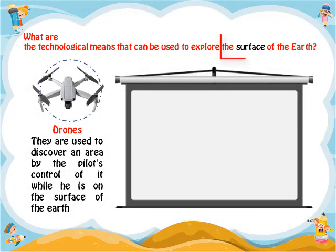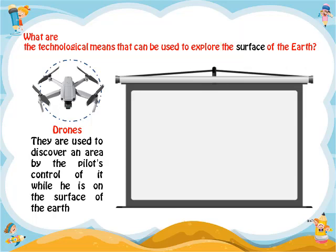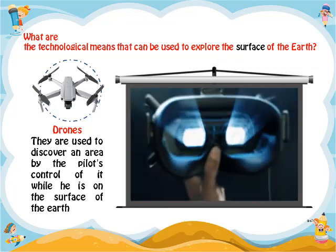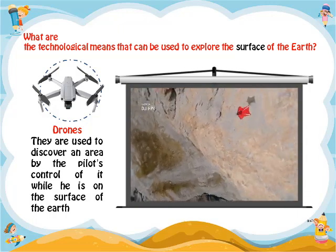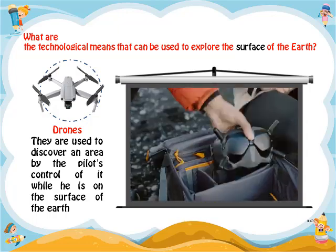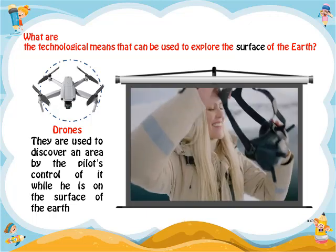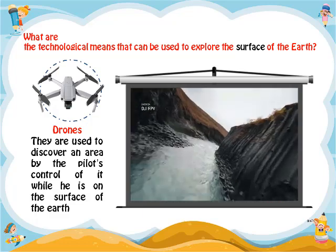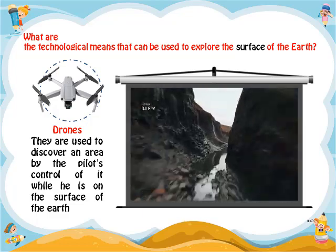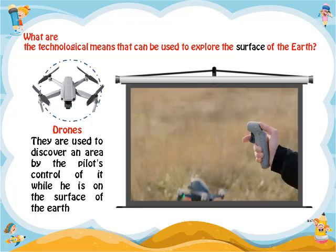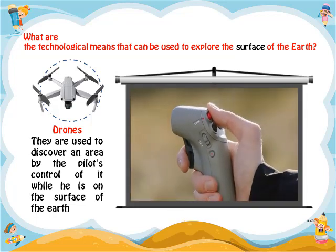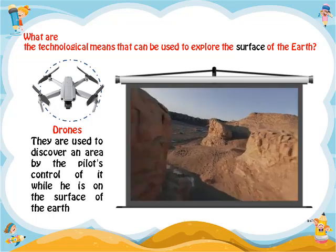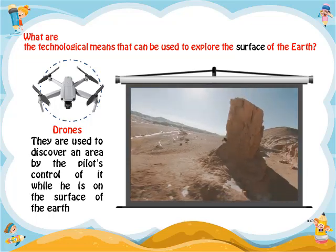What are the technological means that can be used to explore the surface of the Earth? Drones: they are used to explore an area through the pilot's control while on the surface of the Earth. The world's first ready-to-fly FPV drone lets users of any skill level feel the thrill of immersive flight. DJI also revolutionized the FPV experience by creating the DJI motion controller, a compact device that enables ultra-intuitive flight.